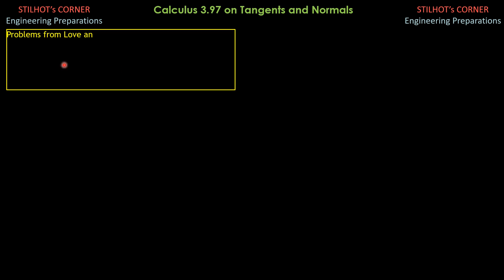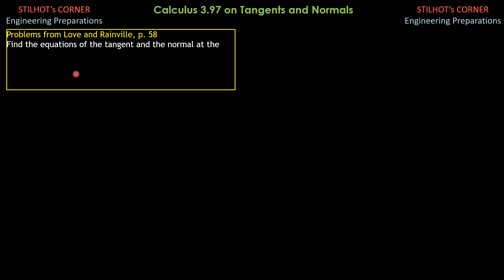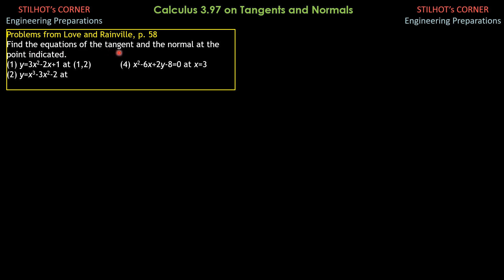These problems are taken from the book by Love and Rainville on page 58, and the numbering are the same: 1, 2, 6. So find the equations of the tangent and the normal at the point indicated.